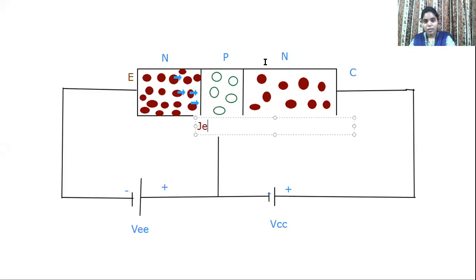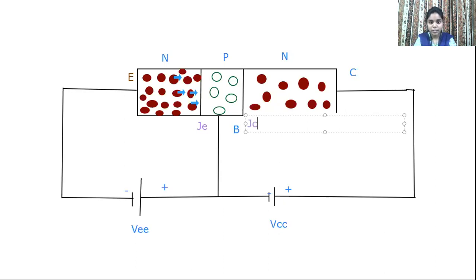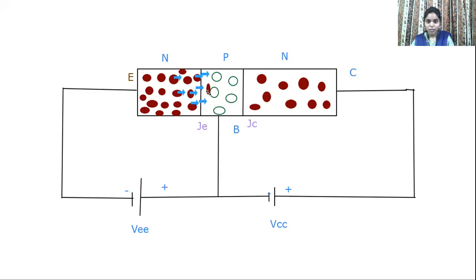You can also see the junction between base and collector. When these electrons are moving, they will cross the emitter-base junction. As they cross into the base, some electrons combine with the holes present in the base. The remaining electrons which crossed the emitter-base junction then try to move towards the collector.